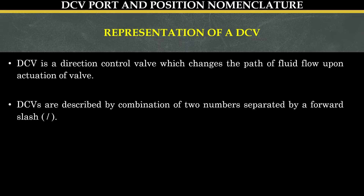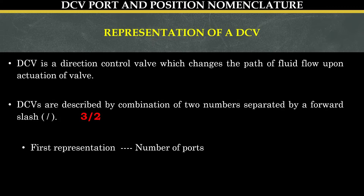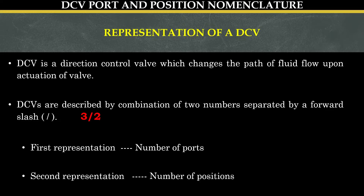Direction control valves are described by a combination of two numbers separated by a forward slash. The first number represents the number of ports and the second number represents the number of positions.